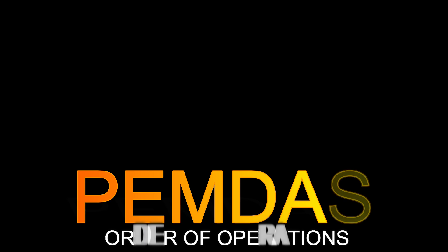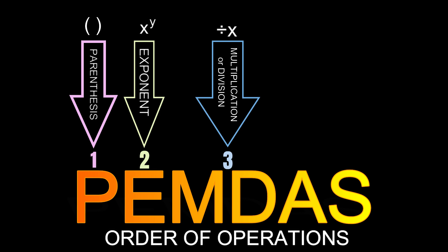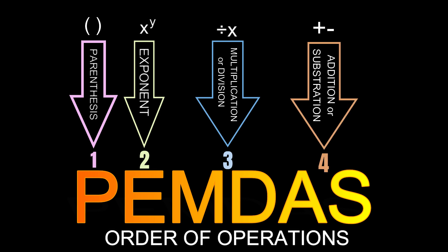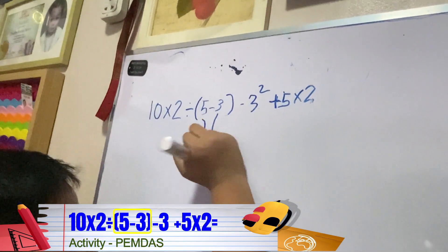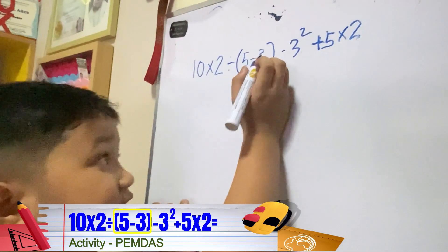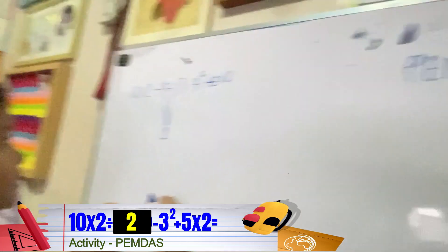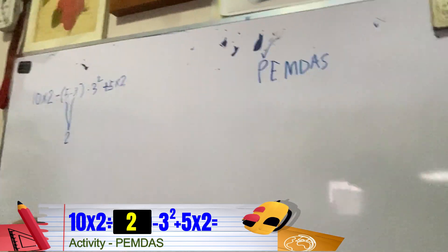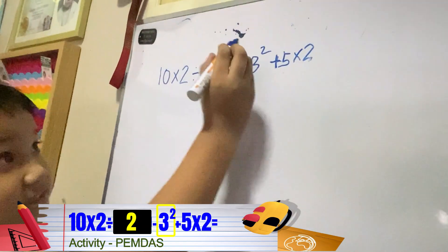Before solving a math problem, always remember the order of operations. PEMDAS stands for: Parenthesis, Exponents, Multiplication or Division, and last to solve is Addition or Subtraction. Let's solve the problem. Starting from parenthesis: 5 minus 3 equals 2. Parenthesis is done!